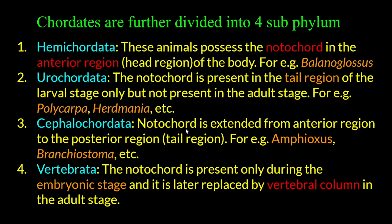Next is Cephalochordata. In Cephalochordata, the notochord extends from the anterior region to the posterior region — it runs throughout the body. The example is Amphioxus. In Vertebrata, the notochord is present in the embryonic stage and is later replaced by the backbone (vertebral column).